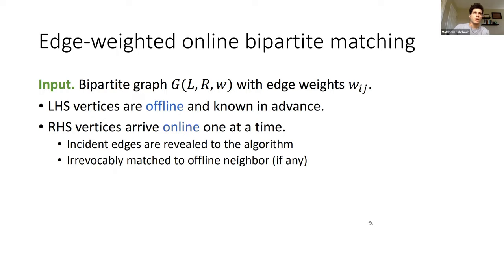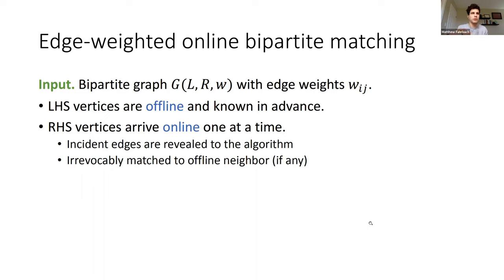The edge-weighted online bipartite matching problem is as follows. We're given as input an edge-weighted bipartite graph with left-hand side vertices L, right-hand side vertices R, and a weight function on all edges. We'll assume the bipartite graph is complete, with non-existing edges having weight zero. In the online matching case, the left-hand side vertices are the offline vertices that the algorithm knows in advance. The right-hand side vertices arrive online one at a time, and each time an online vertex arrives, all of its edges and their weights are revealed to the algorithm.